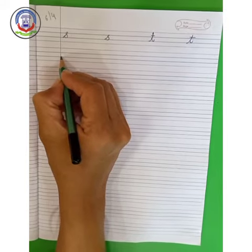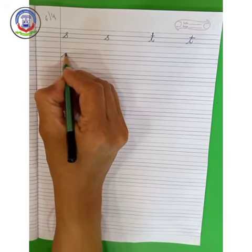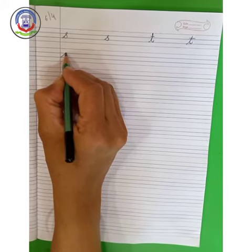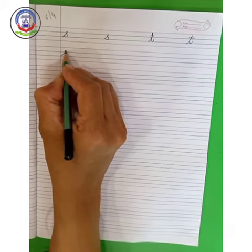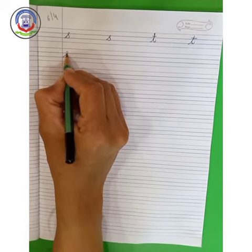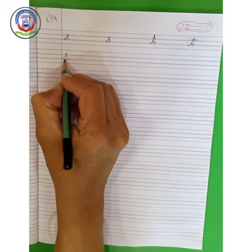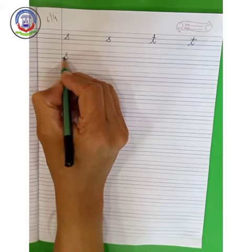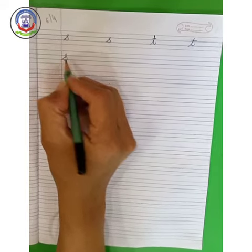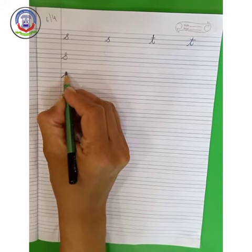Make a slant line from the third blue line to the second blue line, then a curve, and then you have to touch this slant line. Small cursive S.